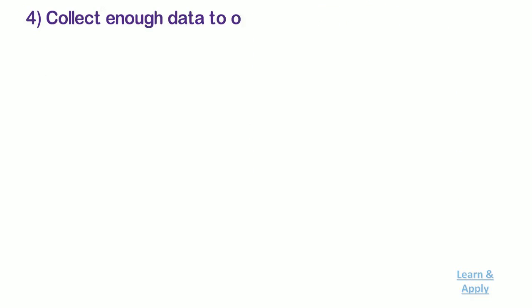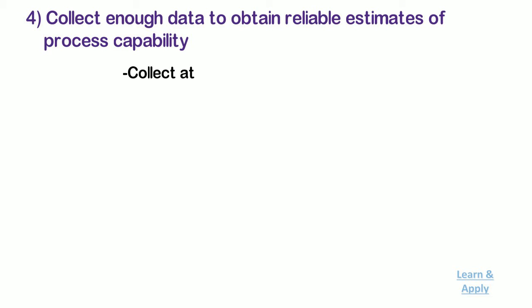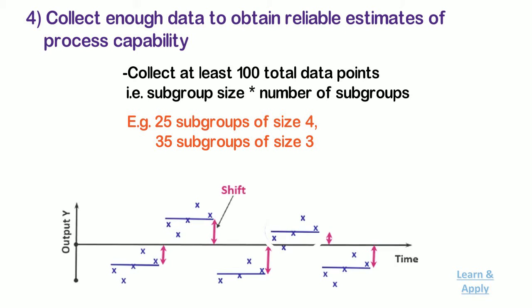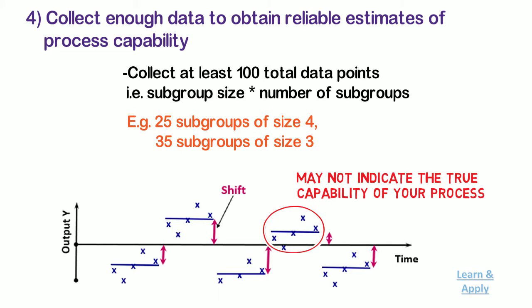Fourth, collect enough data to obtain reliable estimates of process capability. Try to collect at least 100 total data points, i.e., subgroup size into number of subgroups, such as 25 subgroups of size 4 or 35 subgroups of size 3. If you do not collect a sufficient amount of data over a long enough period of time, the data may not accurately represent different sources of process variation and the estimate may not indicate the true capability of your process.